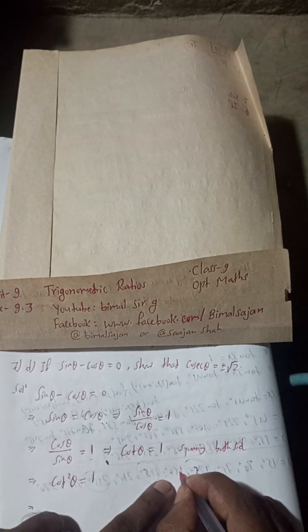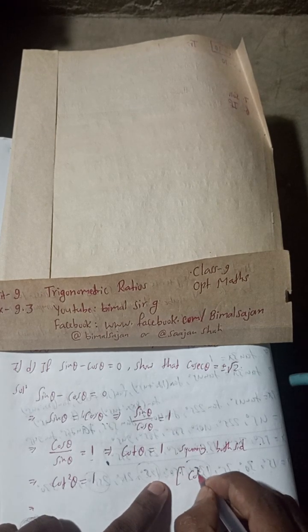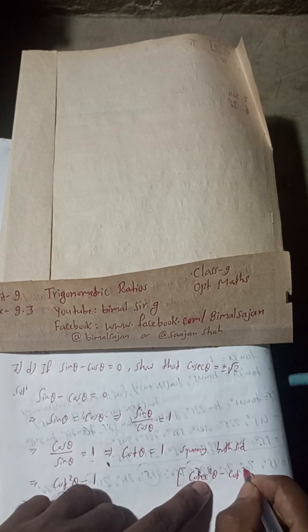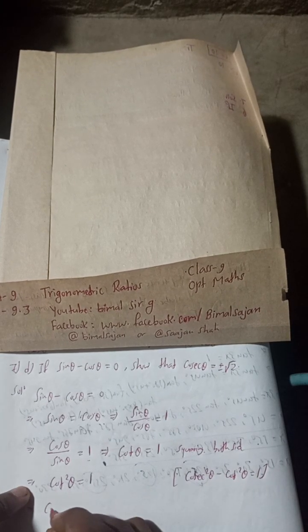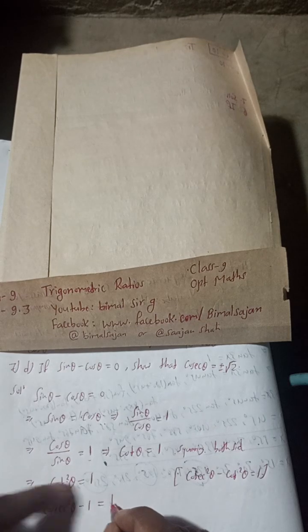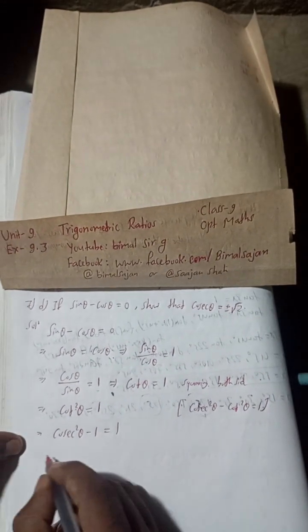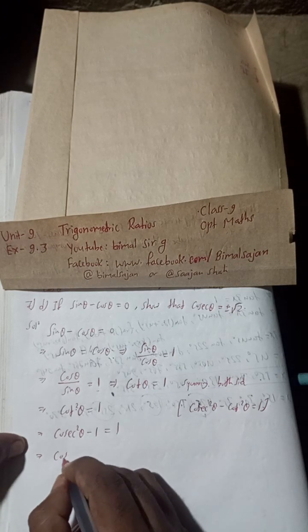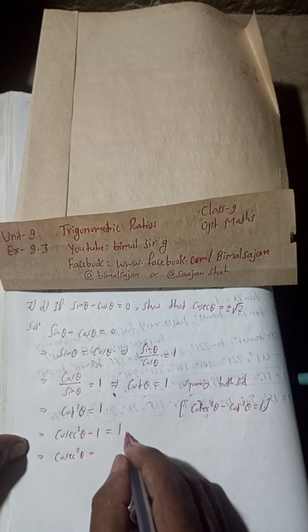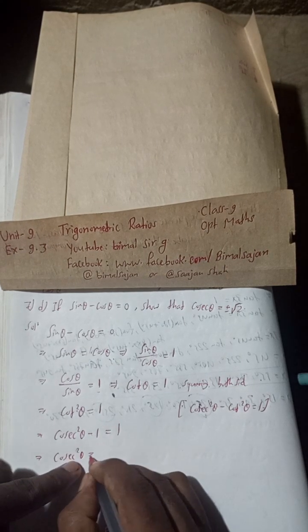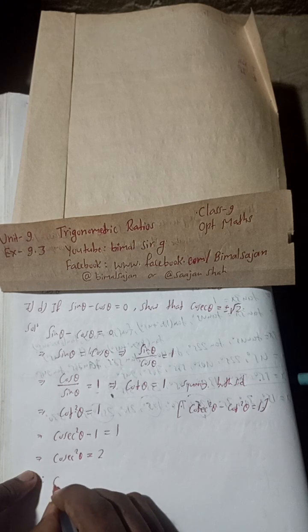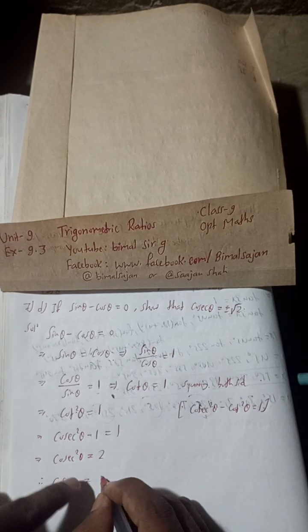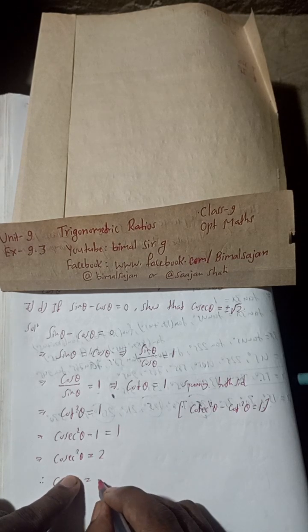Using the identity cosec² θ minus cot² θ equals 1, taking cot² θ to the other side gives cosec² θ minus 1 equals cot² θ, which equals 1. So cosec² θ equals 1 plus 1, which is 2. Taking the square root of both sides, cosec θ is equal to plus or minus root 2. Hence proved.